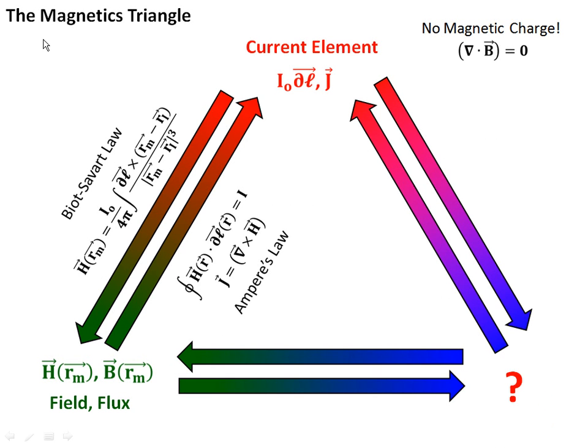Now where we left off last time is we were developing what I'm calling a magnetics triangle, which is similar to our electrostatics triangle. And we saw that we could relate the current element, which is what actually generates magnetic fields, to the field and flux, which are H and B respectively. And remember that the relationship between field and flux is that flux B is equal to mu the permeability times H. And we'll cover what the permeability is a little bit later.